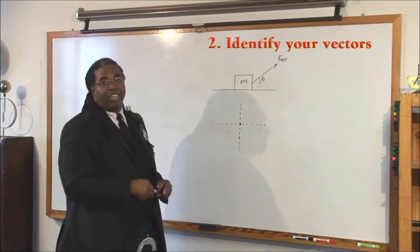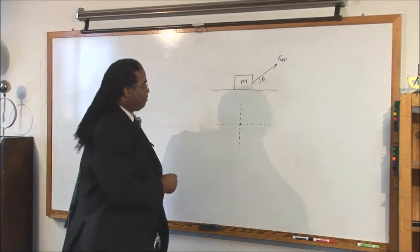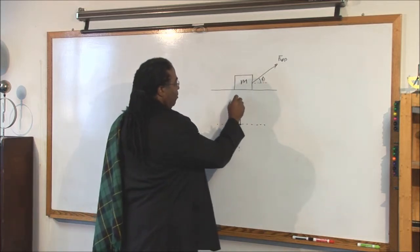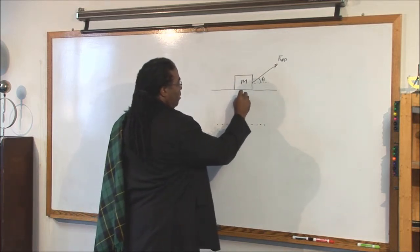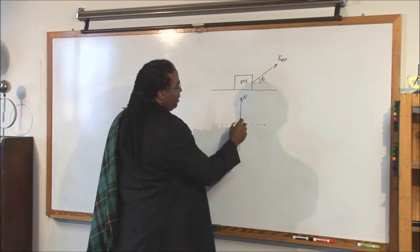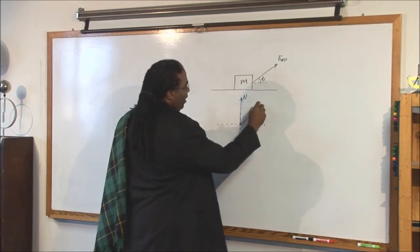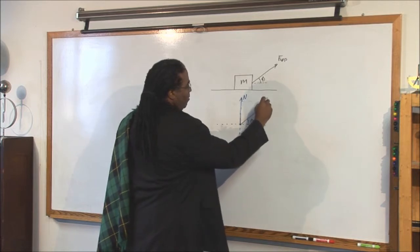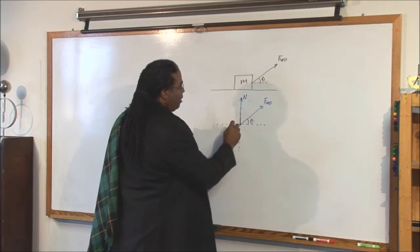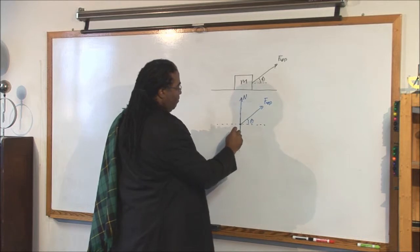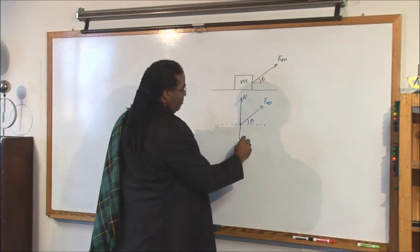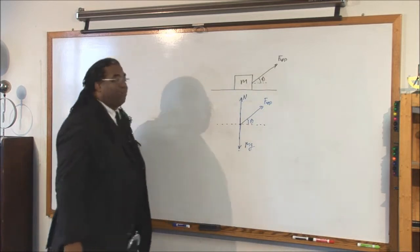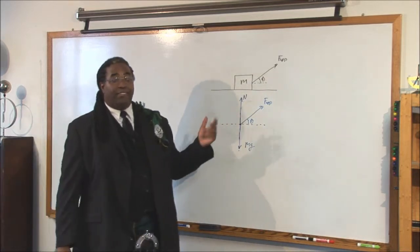Remember: what's touching it plus gravity. We know that the surface is touching it, so it has a normal force. We see that there's an applied force at an angle theta. And we know that there's gravity. Okay, that's step two — we've identified our forces.